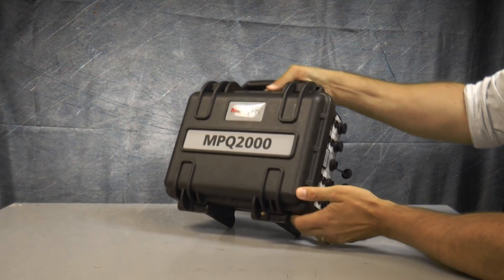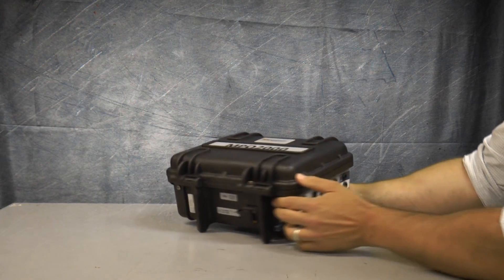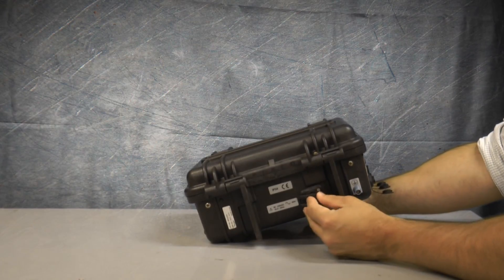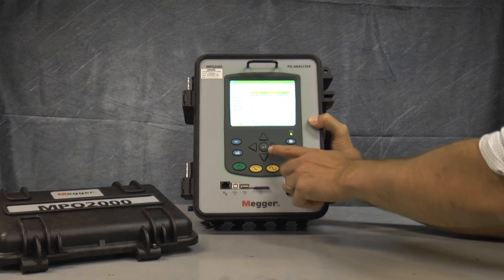It can be powered off of phase A voltage, or off of 115-230 volts AC, or off of battery for up to five hours. The MPQ-2000 is a full-featured Class A analyzer.